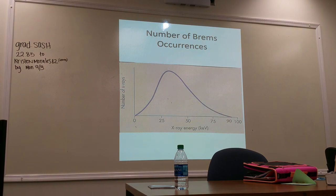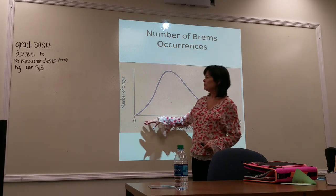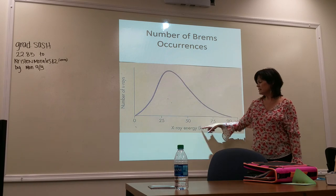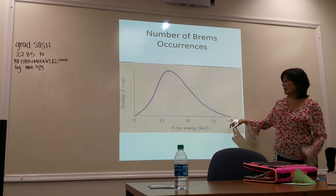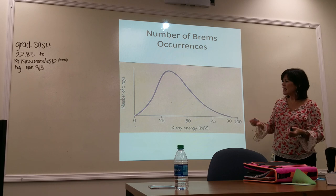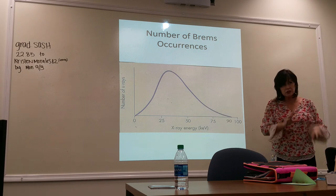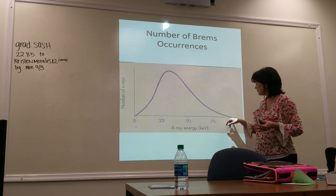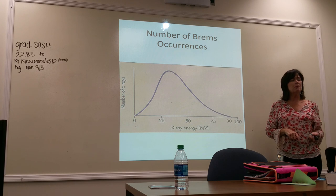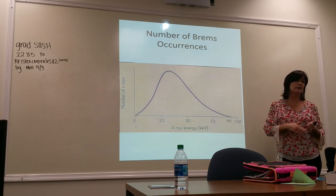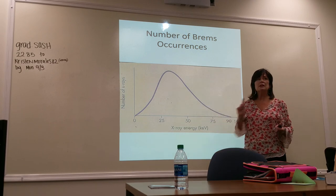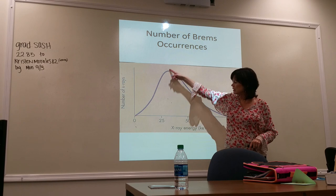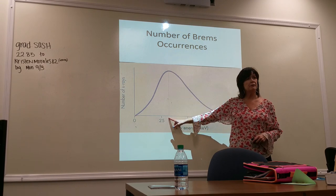Looking at the x-ray spectrum graph: the vertical axis is number of x-rays, and the horizontal axis is keV. At 90 kV selected on the control panel, you cannot have any x-ray energy greater than 90 keV. The beam ranges from nearly zero up to 90, with the majority of x-ray photons peaking at about one-third — around 30 keV.